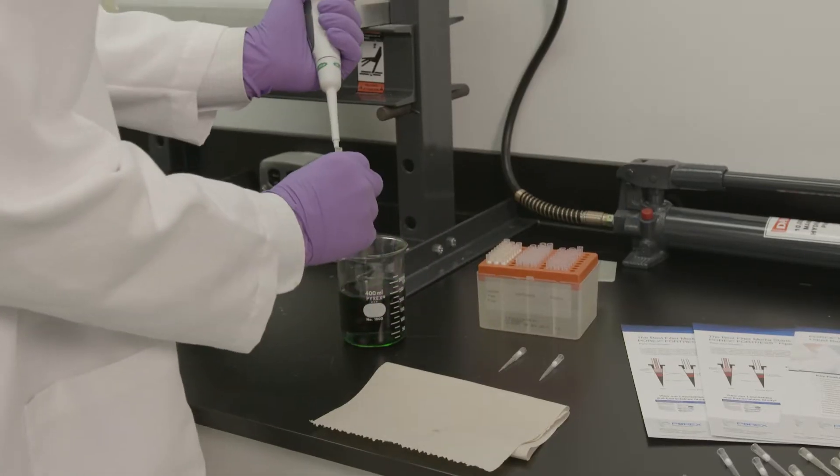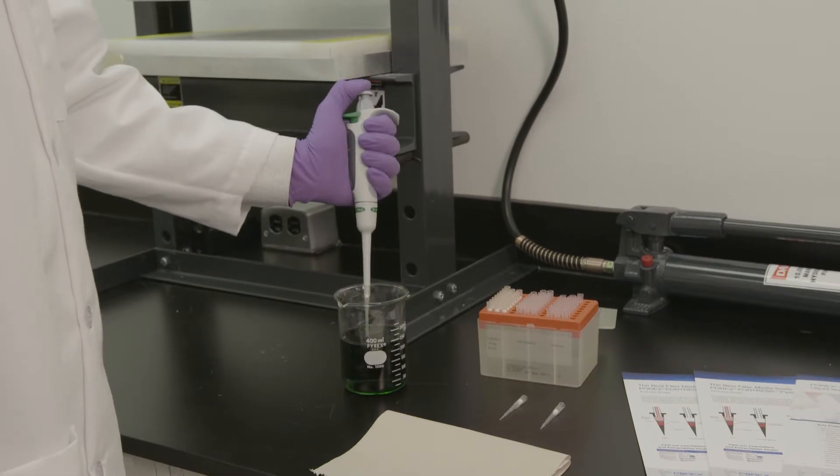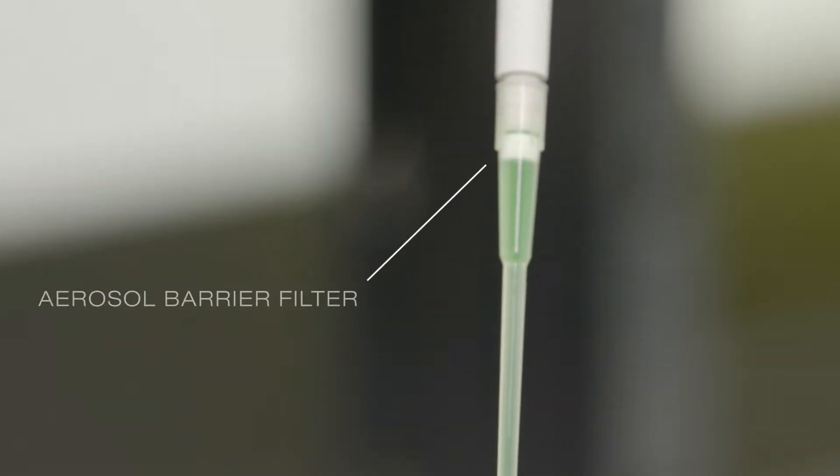Filter A is an aerosol barrier filter set at 200 UL. Watch the sample as we aspirate 300 UL. As you can see, the green sample goes right through the filter.